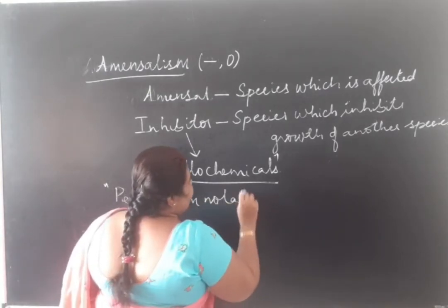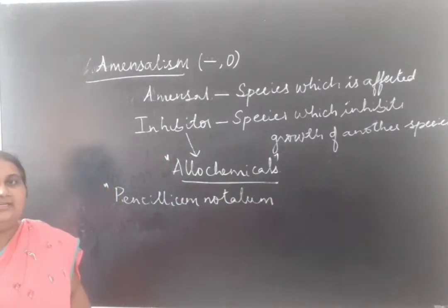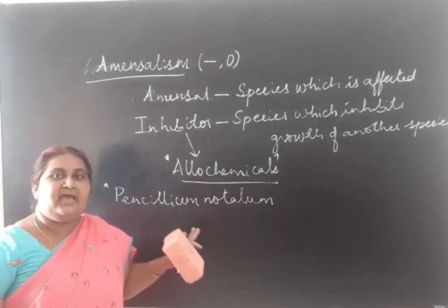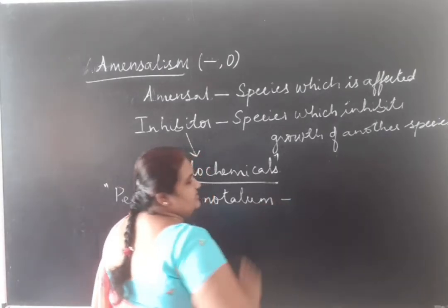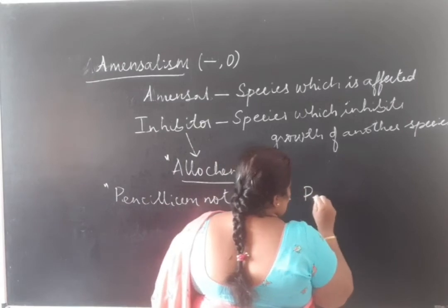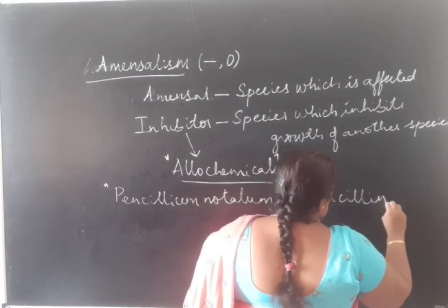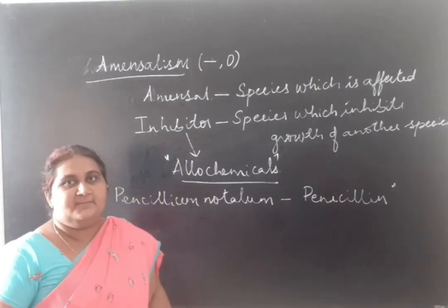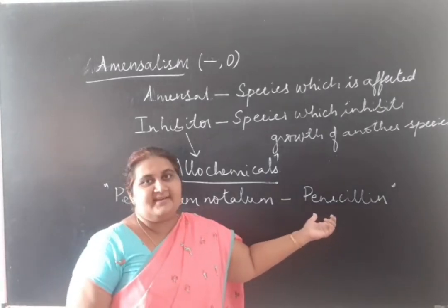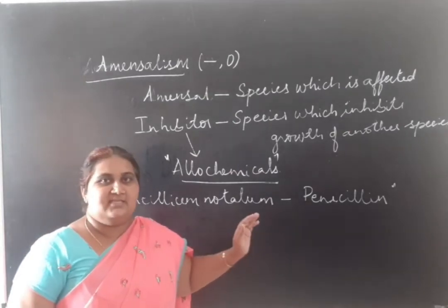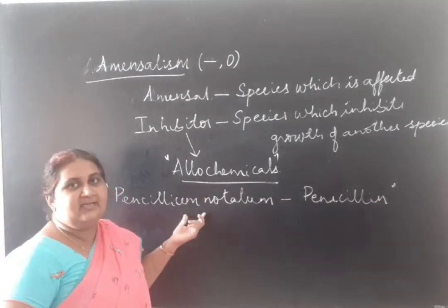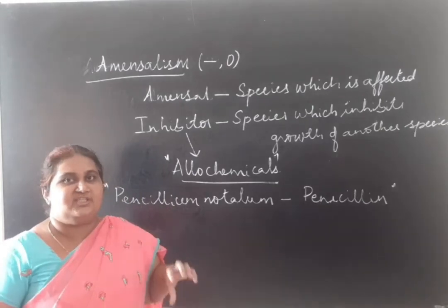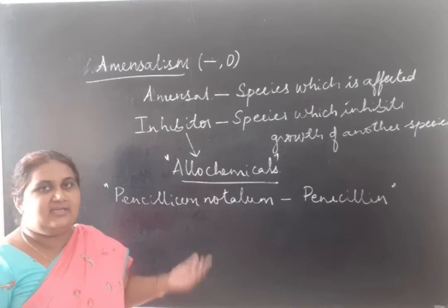An example is Penicillium notatum. It is an inhibitor species that, to inhibit the growth of smaller microorganisms, produces an allelochemical called penicillin. We use penicillin as an antibiotic, but actually penicillin is an allelochemical produced by Penicillium notatum to kill other smaller microorganisms found growing near it.